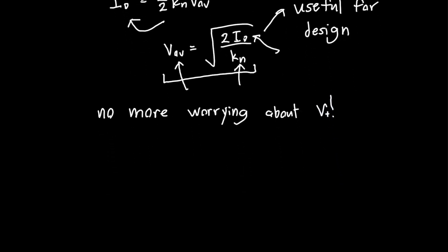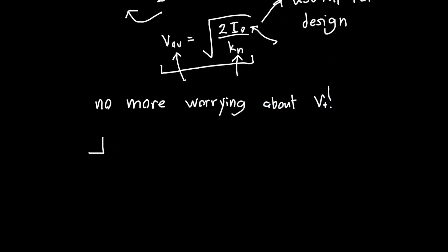So I've showed you what the overdrive voltage is for an NMOS, but what about if we have a PMOS transistor? So we've got some voltage at the gate, some voltage at the source, and some voltage at the drain.